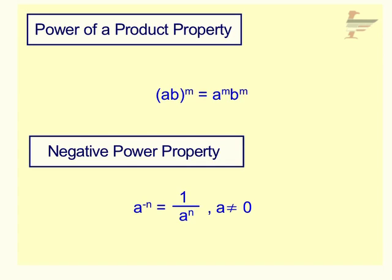Power of a Product property: if you are multiplying two bases on the inside — a times b — with an exponent on the outside, this is one time when you are allowed to bring your exponent into each base. So let's say we had x times y, all squared. I can bring that squared in to each base on the inside — you can only do this if you're multiplying or dividing your bases on the inside. That's going to become x squared times y squared.